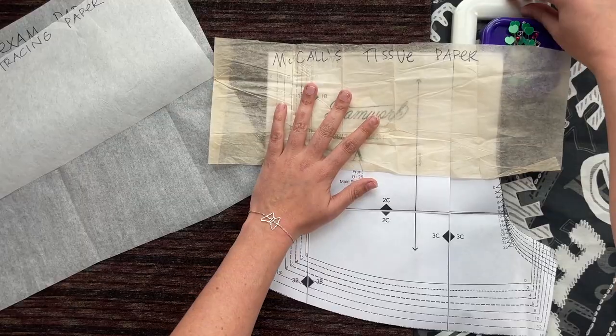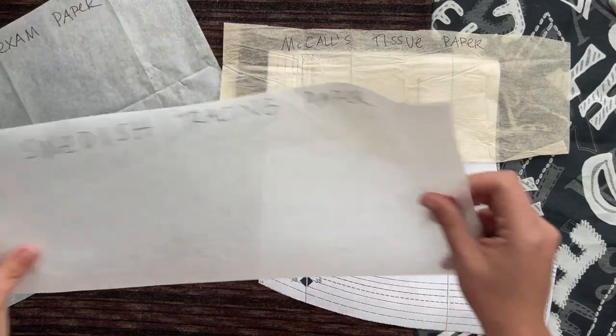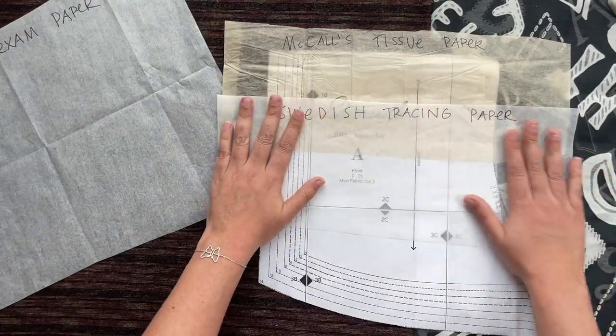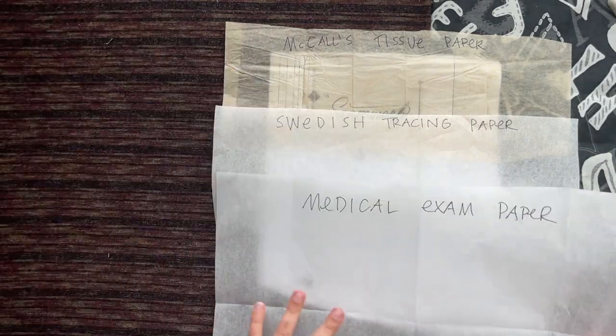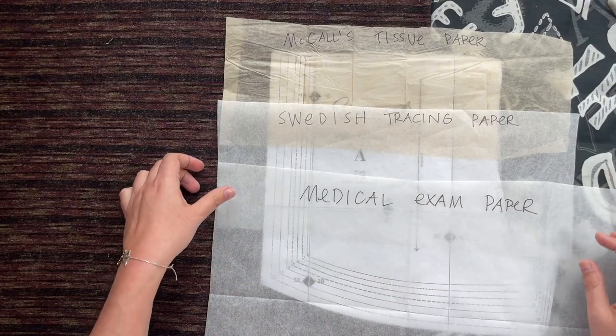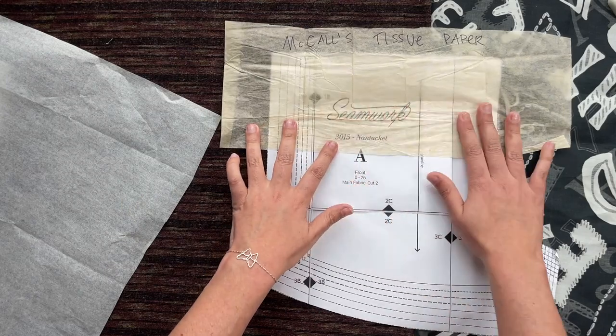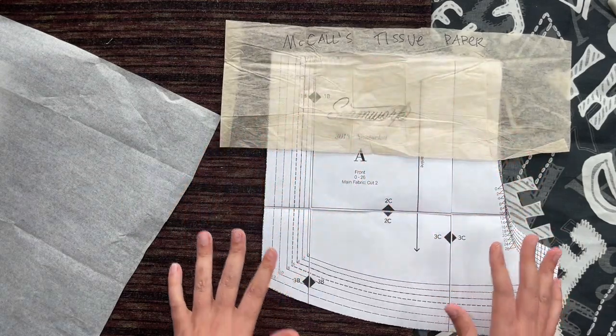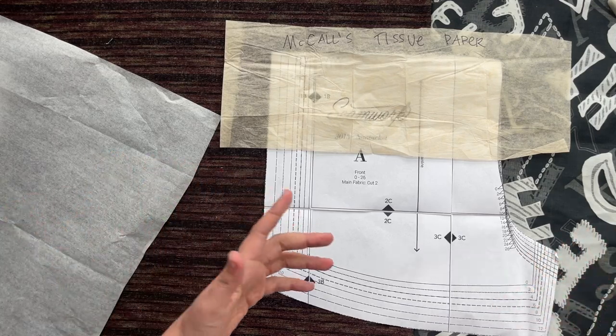We're going to start with tracing. We've got our McCall's tissue paper, and we've also got Swedish tracing paper. Now this is the stuff that is sewable. And then we've got the ever lovely medical exam paper. We're going to be analyzing these for how easy they are to trace over, how easy they are to see through, plus how easy they are to actually draw on.